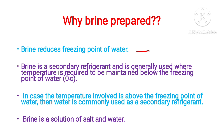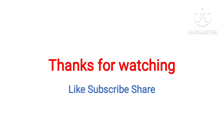Brine is a secondary refrigerant generally used where temperature is required to be maintained below the freezing point of water. In cases where the temperature involved is above the freezing point of water — such as above 2 or 3 degree Celsius — pure water is commonly used as a secondary refrigerant. But when we need temperature below 0 degree Celsius, we use brine, which is prepared using salt and solvents.